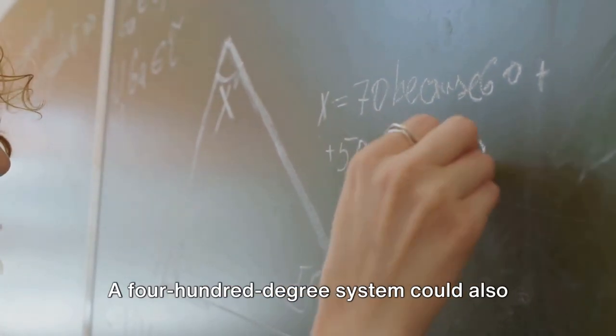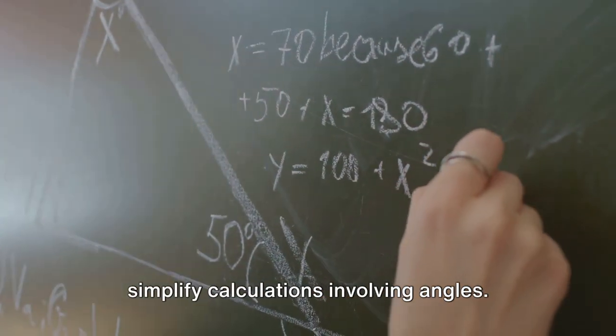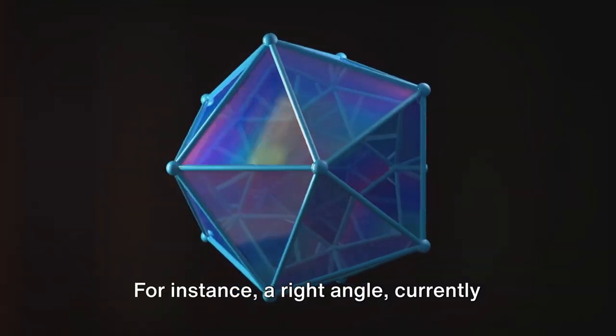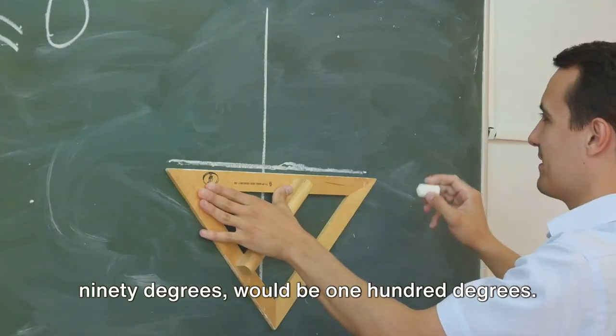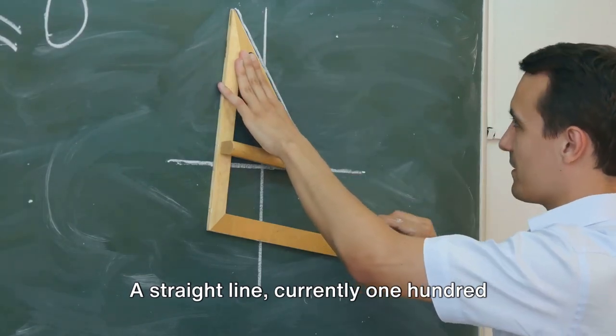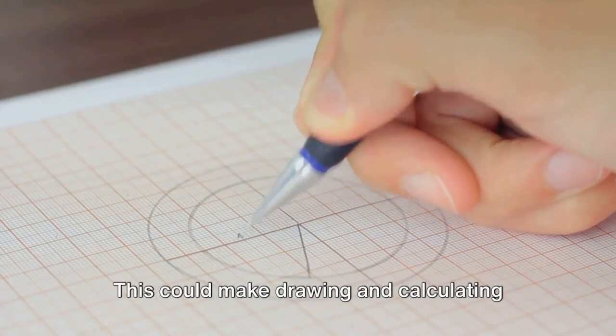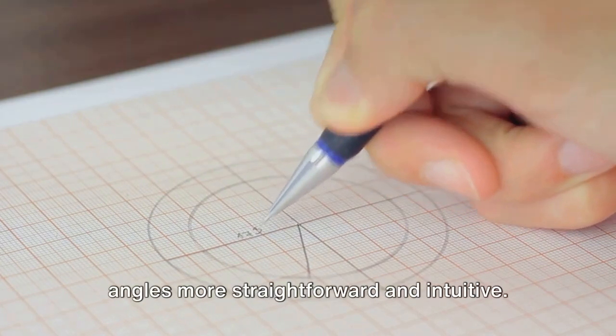But that's not all. A 400-degree system could also simplify calculations involving angles. For instance, a right angle, currently 90 degrees, would be 100 degrees. A straight line, currently 180 degrees, would be 200 degrees. This could make drawing and calculating angles more straightforward and intuitive.